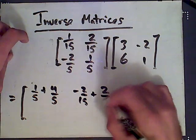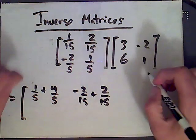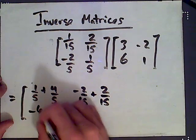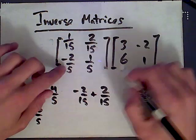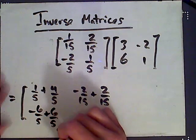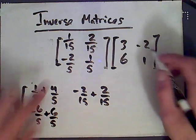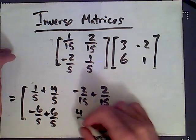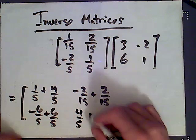Plus 2/15 here. Down here we get -6/5 plus 6/5. And finally here we get -4/5—negative and negative makes positive—4/5 plus 1/5.